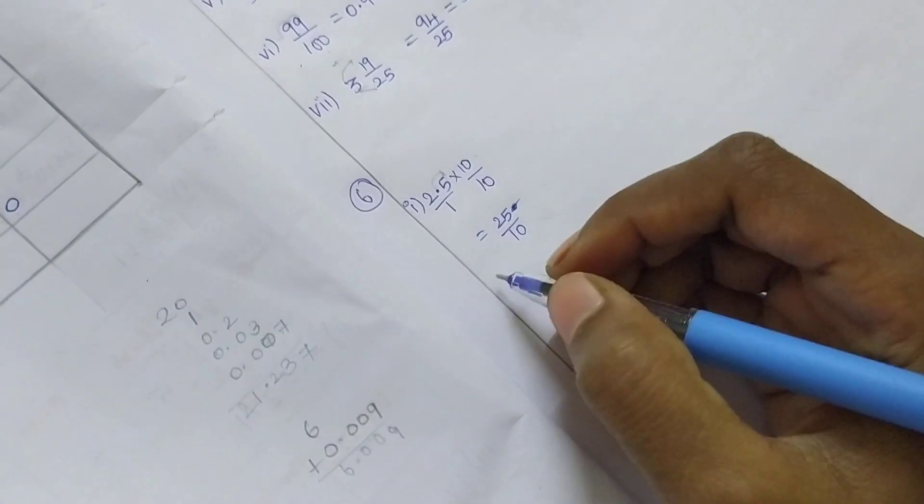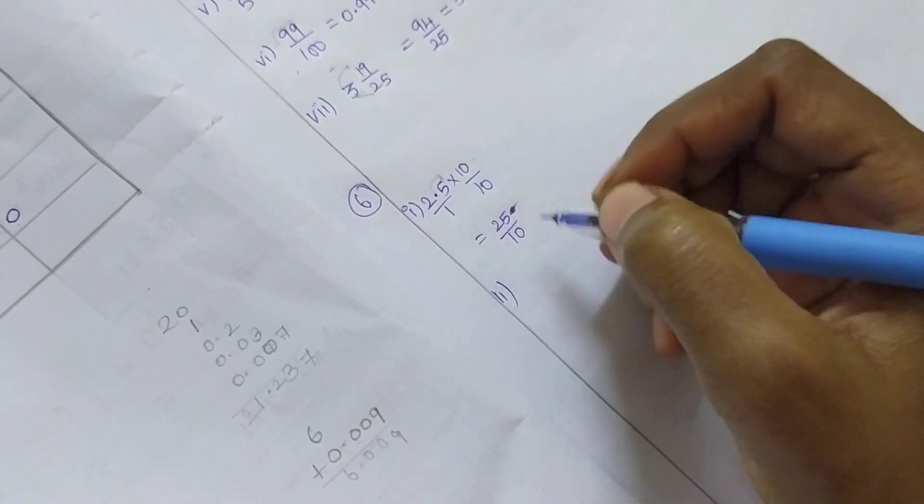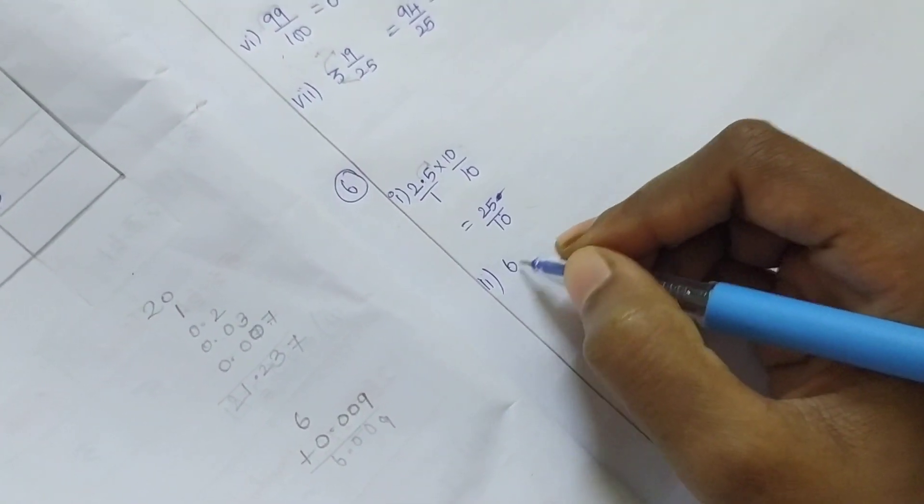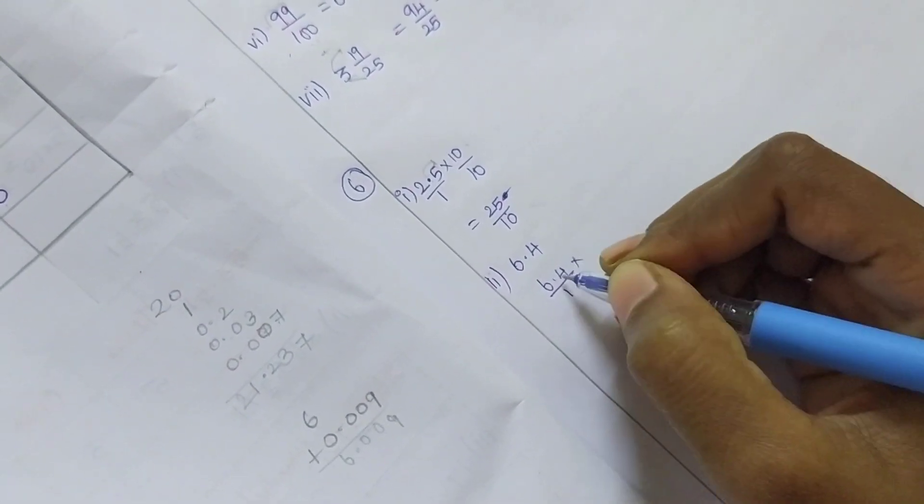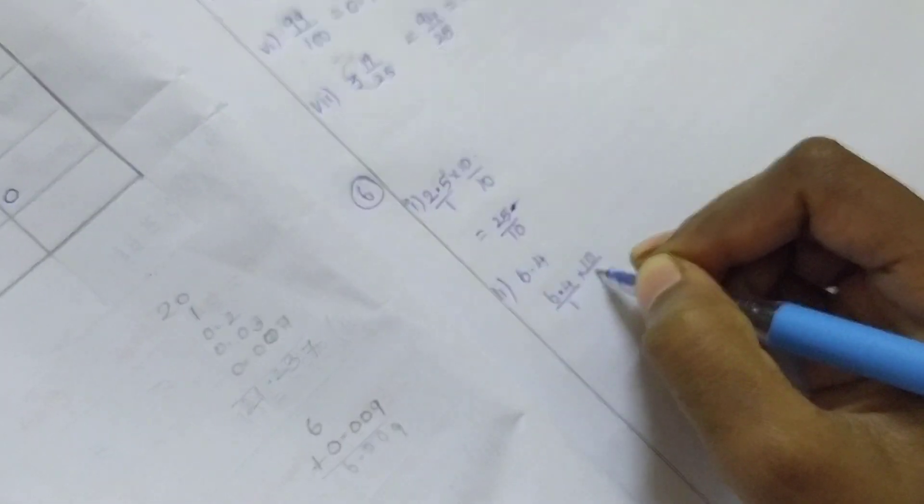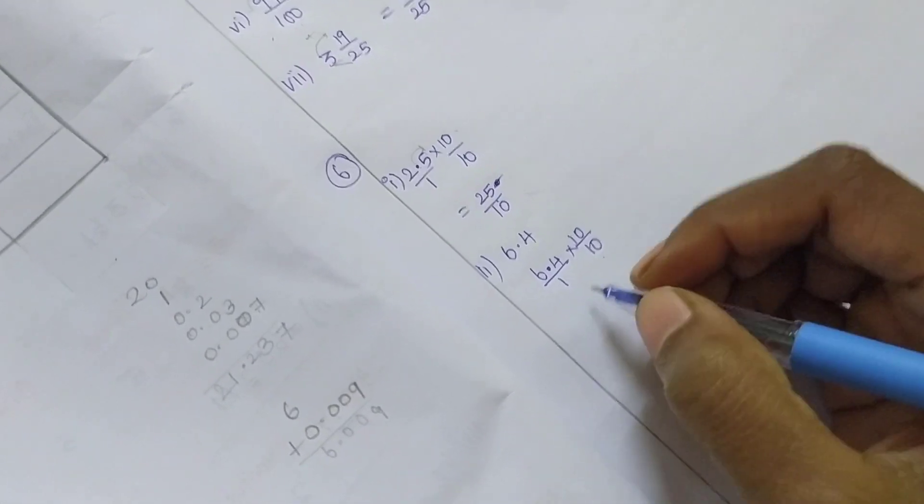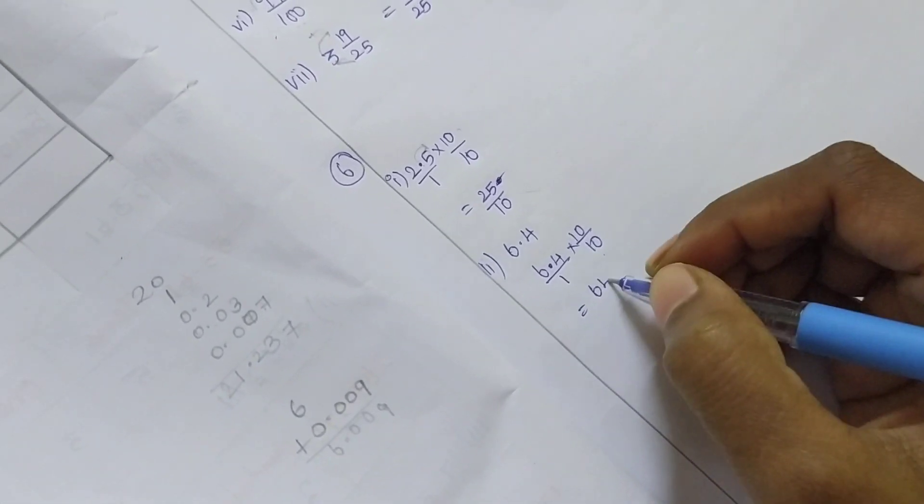So 6.4: 6.4 by 1, times how many points? One point, so 10 by 10. Multiplying and dividing 10 by 10, so we get 64/10.